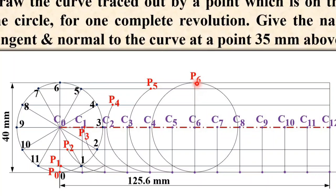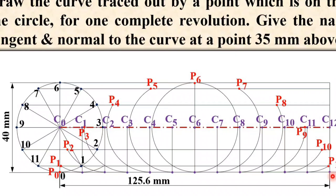Repeat the same step. C7 is the center — draw the arc to get P7, P8, P9, P10, P11, and finally P12. Now join all the points with a smooth curve, and you will get the cycloid.